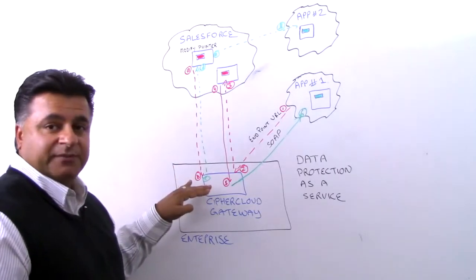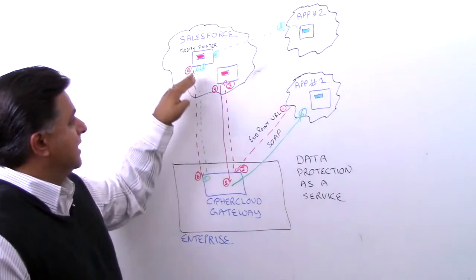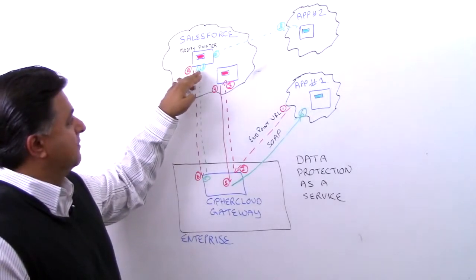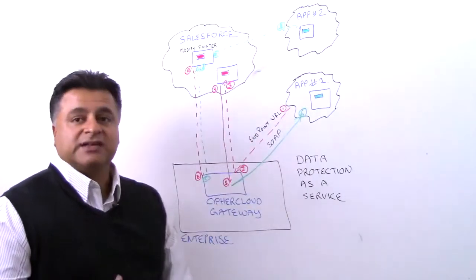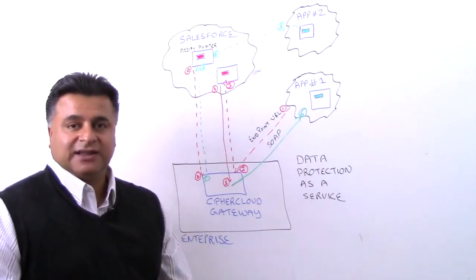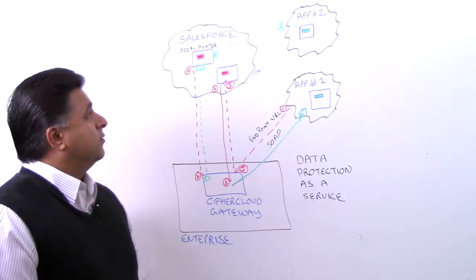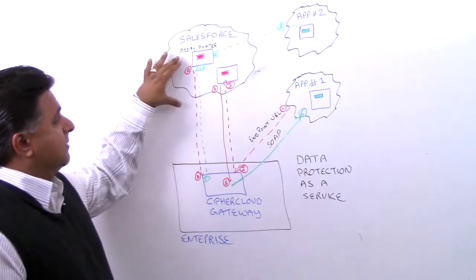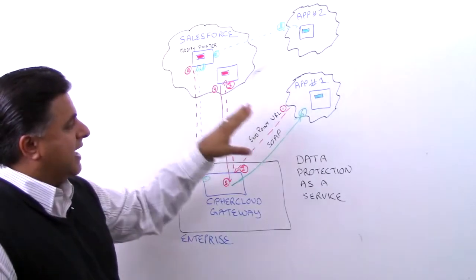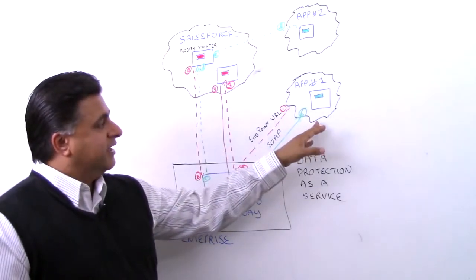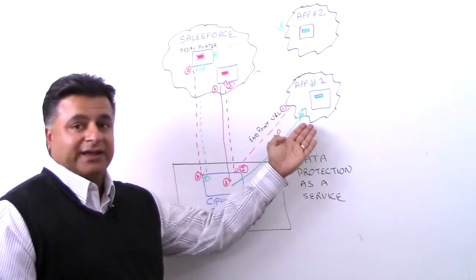And then we conduct our decryption or detokenization activity. We then forward that information in clear text in step D, and then we forward it along to the application so it can do its processing or further activity based upon that clear text information. This is an example of server-side or modification of the pointer or URL in comparison where actually on application one, we're changing the endpoint URL within that application.